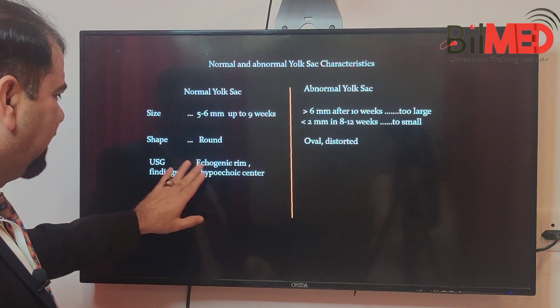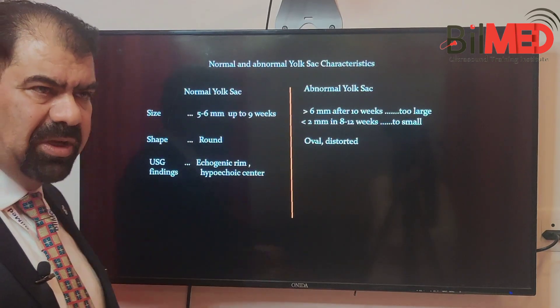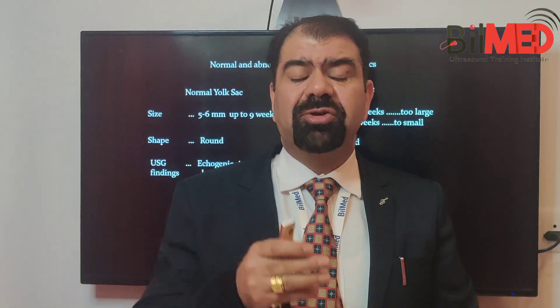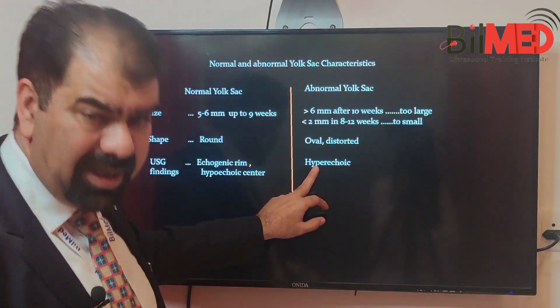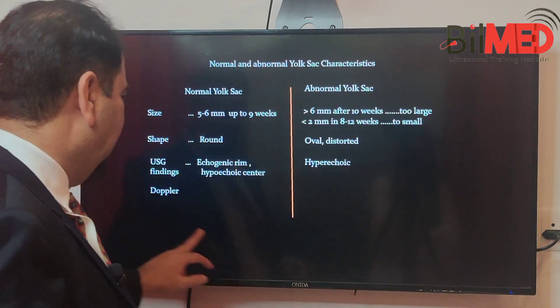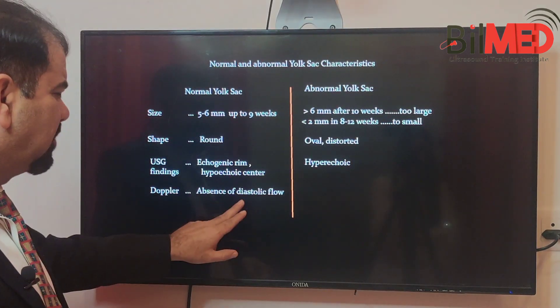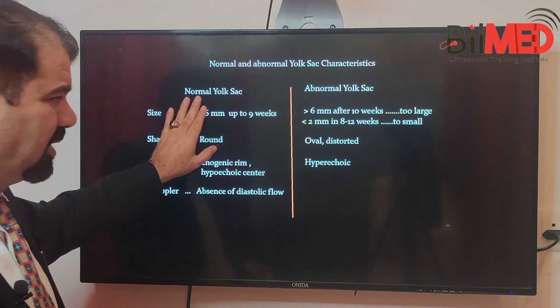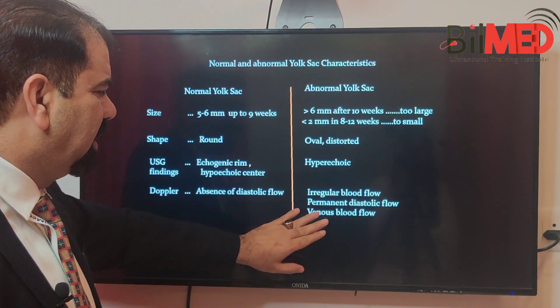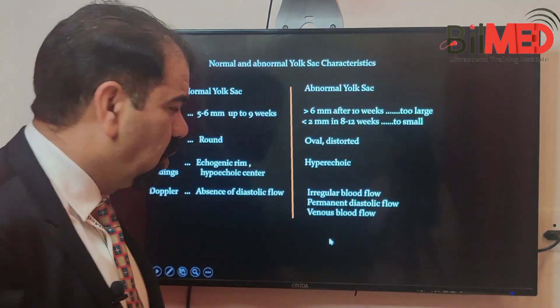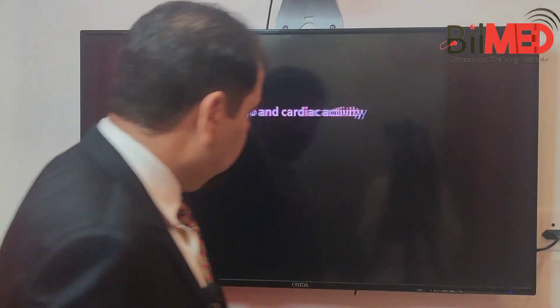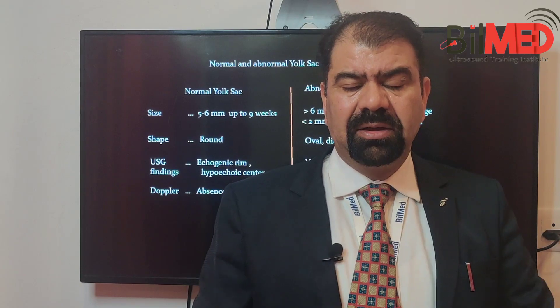When scanning, the yolk sac should have an echogenic rim with a hypoechoic center — the center must be jet black and surrounded by an echogenic wall. If the center is hyperechoic, that is abnormal. On Doppler, normal cases show absence of diastolic flow, whereas in abnormal cases there can be some venous blood flow, indicating congestion, which is abnormal.